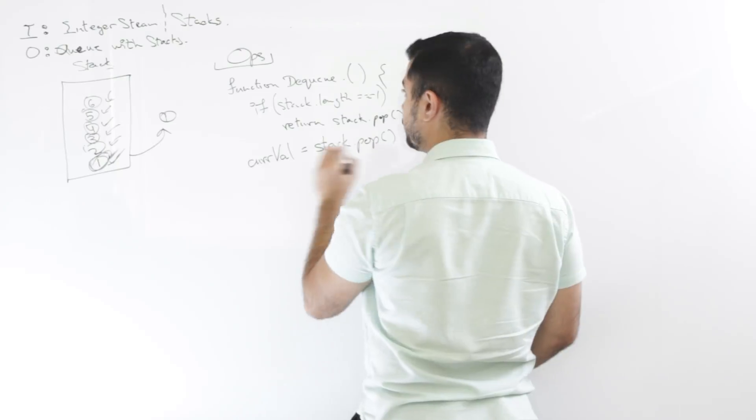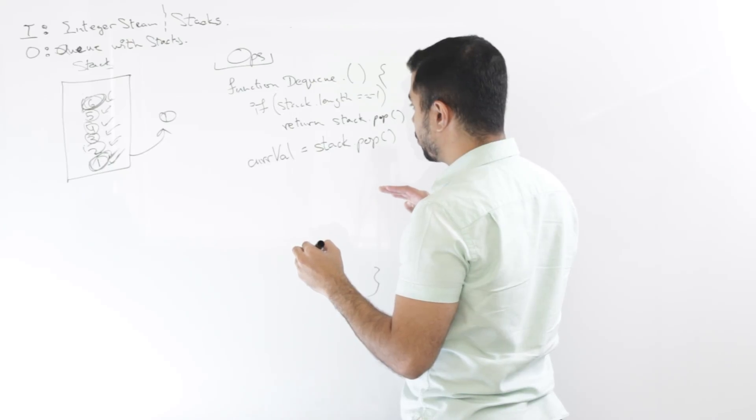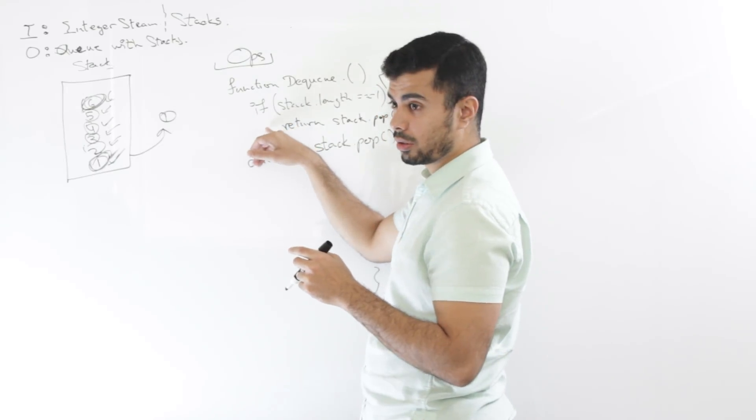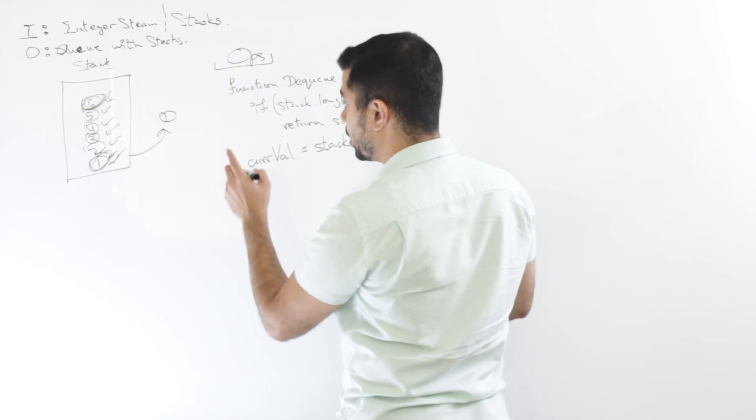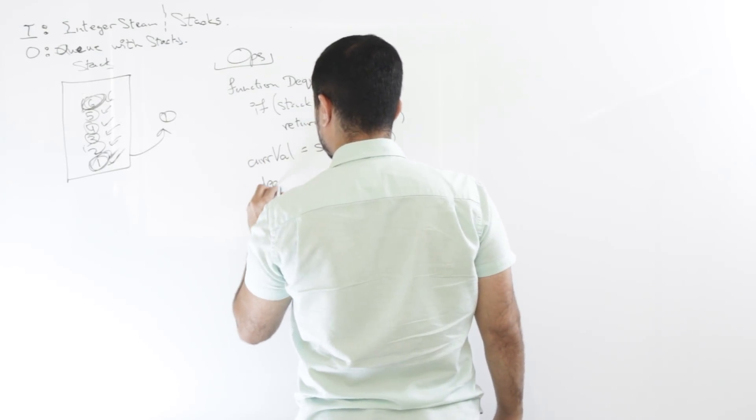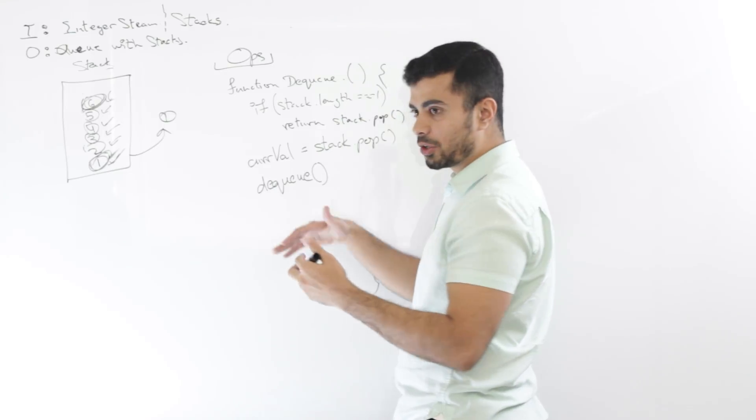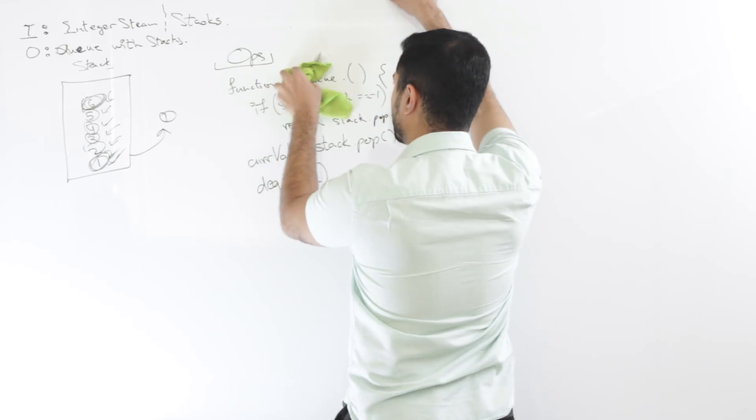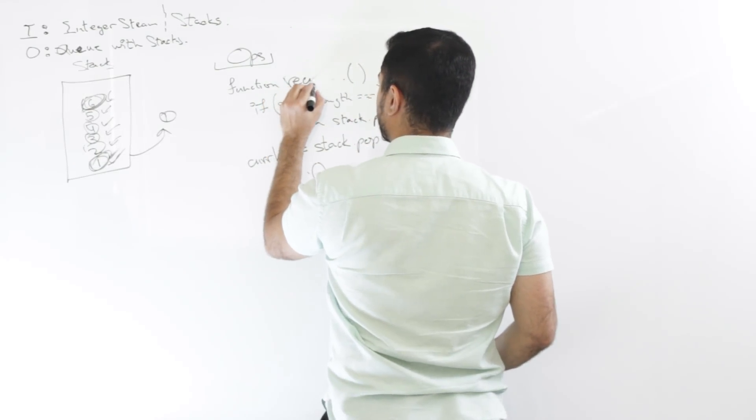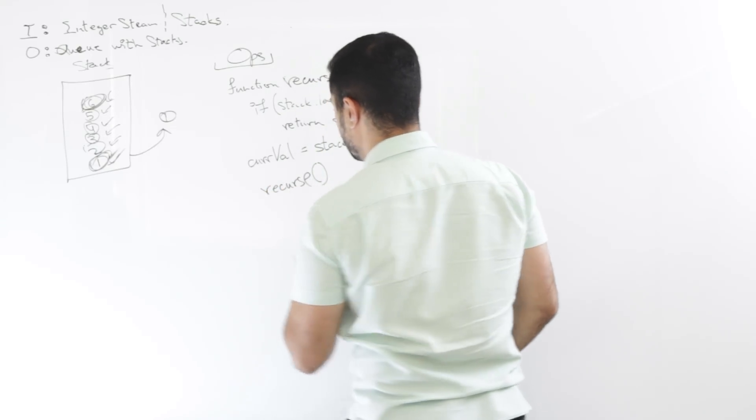Mm-hmm. So in essence, I just stored this in memory. Right? So I will say, okay, curve value stack dot pop. I know that there are more values because this condition didn't meet and I'm still going forward. So I say stack dot pop and then I say DQ again, maybe I could have named this function better. You know, DQ, I'm not like DQing multiple times. So just so we are both clear. Let me just name this recurs, just so we don't confuse ourselves. Mm-hmm.